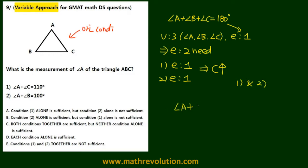If we add the two equations given in the conditions, what we get is angle A plus angle A plus angle B plus angle C equal to 110 degrees plus 100 degrees, which is 210 degrees on the right side.